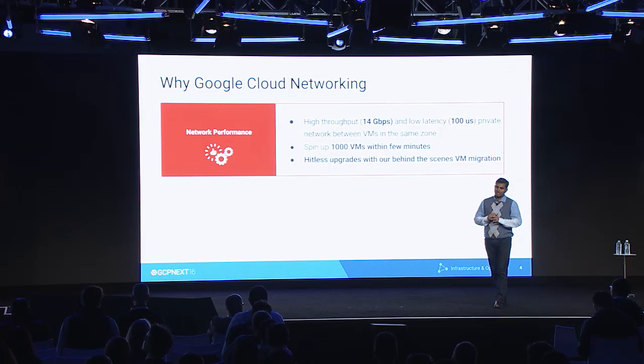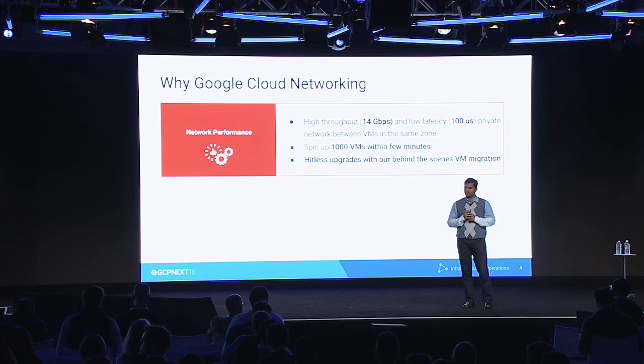Coming to how fast you can actually bring up VMs in Google Cloud — you can bring up one VM, two VMs, up to 1,000 plus VMs. Thousands of VMs you can bring up in a couple of minutes. On average, three to five minutes, you can have 1,000 VMs up and running.